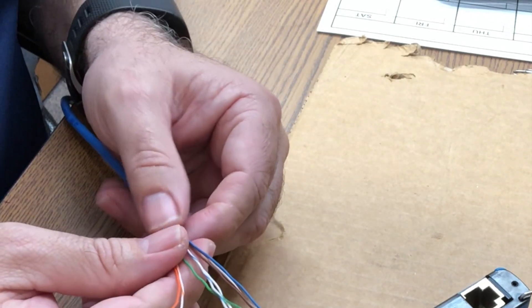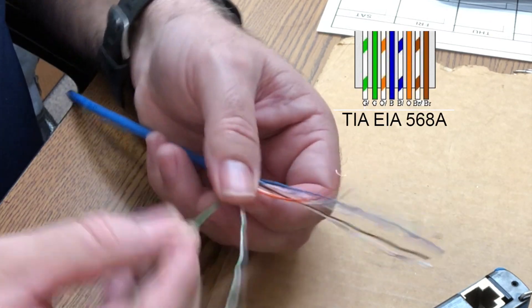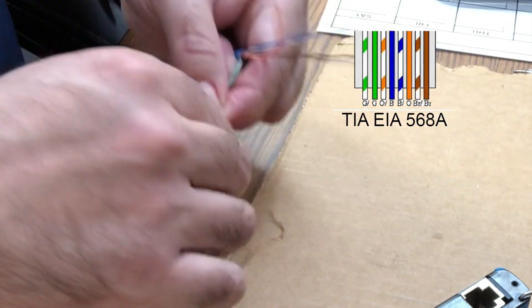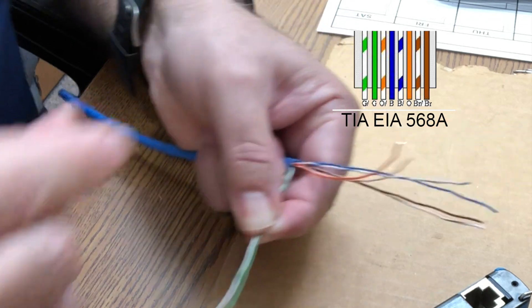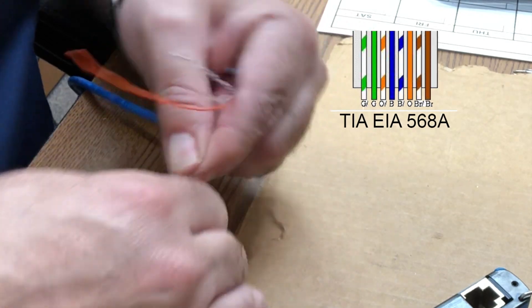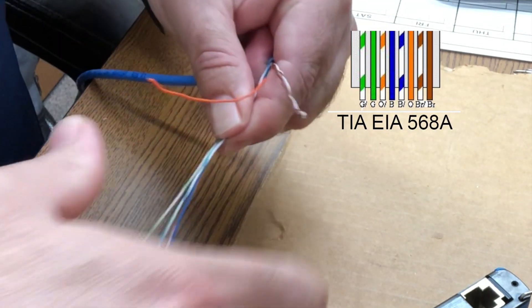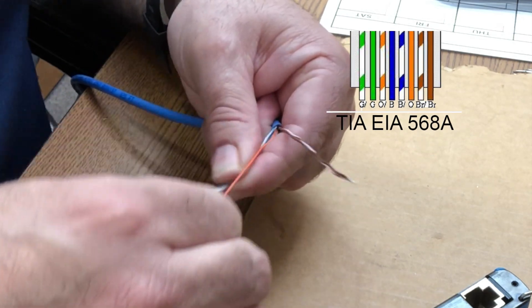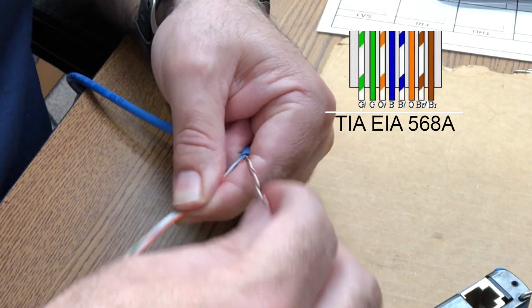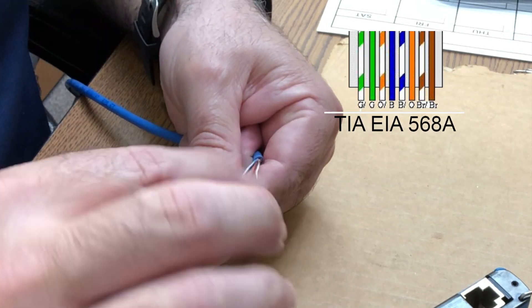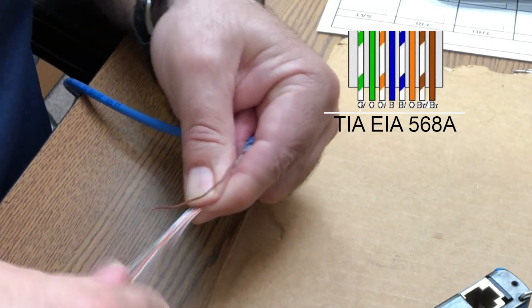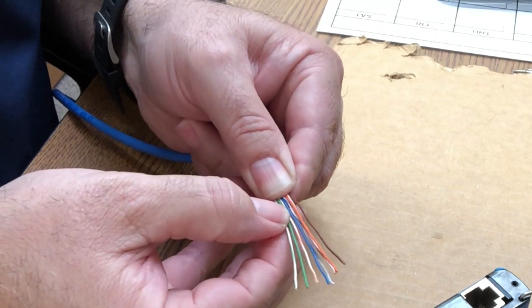We're gonna start off with the green and then the solid green. So there's my striped green, solid green, and then I need the striped orange, and then I need a solid blue, and a striped blue. After the striped blue we get our solid orange and then the browns, striped brown and then solid brown. Get those nice paired up that way one two three four five six seven eight.